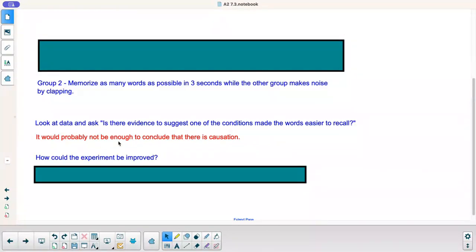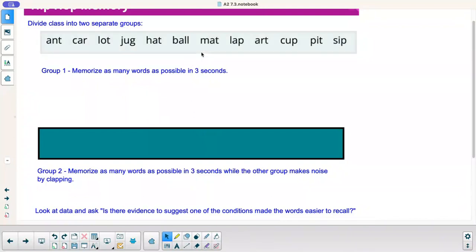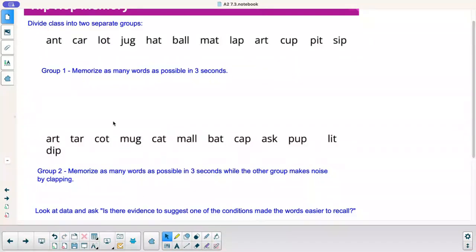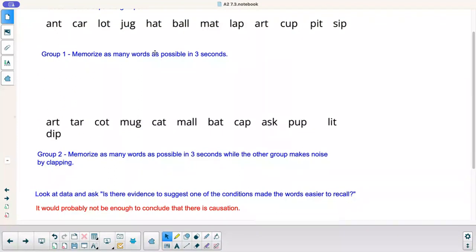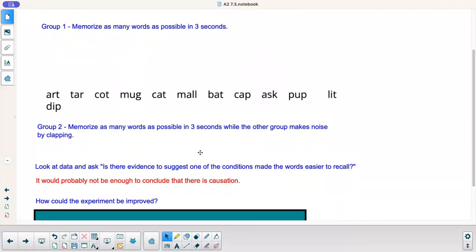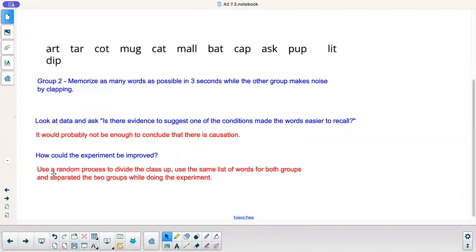It would probably not be enough to conclude there's causation. What probably would happen is you're thinking here that group one and group two, your initial thought is group one would be able to memorize more because they could focus. Group two would be a little more distracted. But probably not going to be off by a ton. And you really don't have a giant sample space. You only have whatever many people are in your class, like 20 or so. So here's what we're really looking at. How can this be improved?